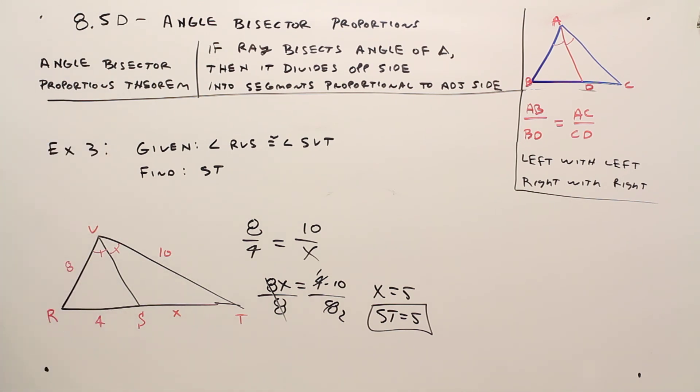So there you have it. A very basic example of using the angle bisector proportions theorem.